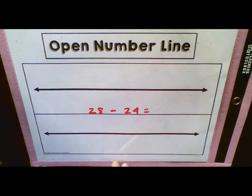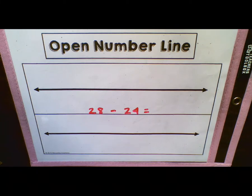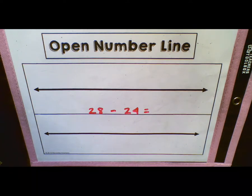This is an open number line that I'm showing right here. Students in class have this in their math folder. Every student has a place value map, which is what we started working with in our first lesson. They have an open number line, a 120s chart, and also a little card that shows the numbers counting by tens and how to write them in word form.